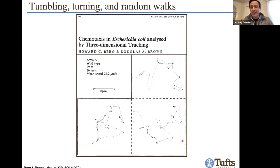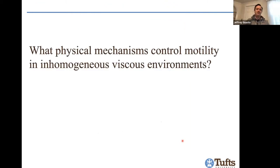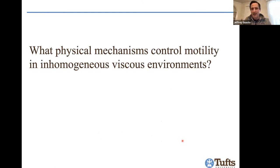There are situations where other physics comes into play that can bias the cell's motion and break this unbiased random walk model. These include things like chemotaxis, phototaxis, gravitaxis, and magnetotaxis. Today we're going to talk about something a little different, called viscotaxis. The question we're trying to answer is: what are the physical mechanisms that control cell motility in inhomogeneous viscous environments — where the material properties of the fluid are changing in space — and how does that couple to cell transport on the ensemble scale?